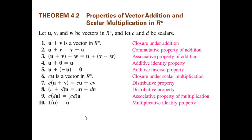Theorem 4.2: Properties of vector addition and scalar multiplication in Rn. The good news is that these properties are exactly the same as the ones we have seen for vectors in a plane. The only difference is that we are dealing with an n-dimensional plane and vectors are defined by n components. All properties — closure under addition, commutativity, associativity, additive identity, additive inverse, closure under scalar multiplication, left and right distributivity, associativity of multiplication, and multiplicative identity — are the same, and the proofs are exactly the same.